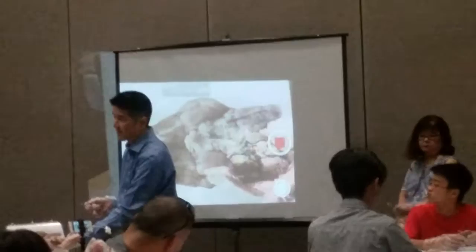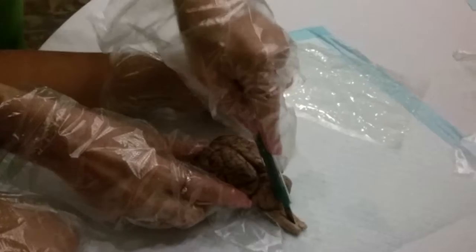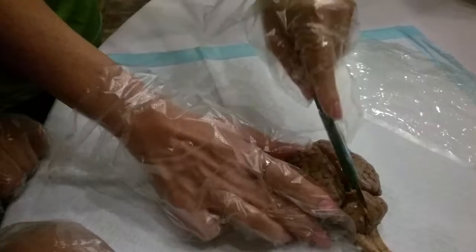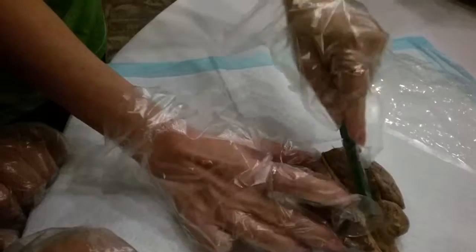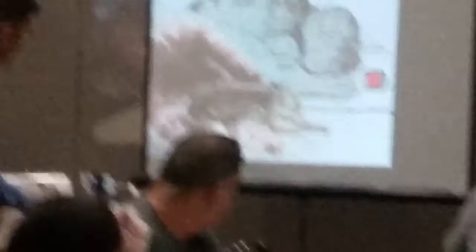We're going to cut this brain in half right down the midline, though cutting it right down the midline is easier said than done. I'm cutting through the spinal cord, and then you have to extend the cut through the cerebellum. The cerebellum doesn't have a clean midline. These branching white structures are called the arbor vitae, or the tree of life.